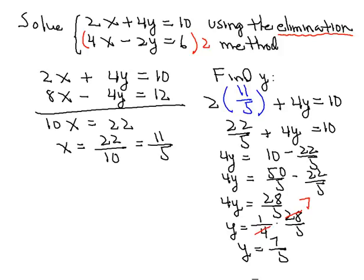So now we'll express the solution then as an ordered pair. So we would then write the ordered pair 11 fifths and then 7 fifths. And what we'll do next is to check that ordered pair in one of the original equations.